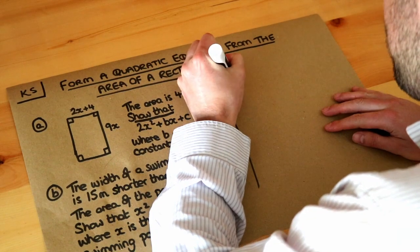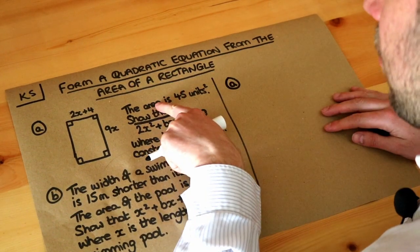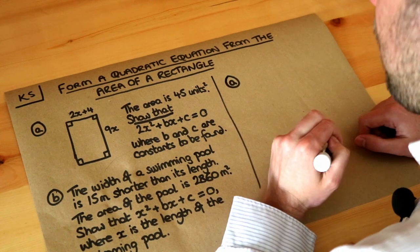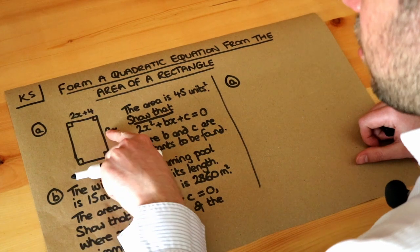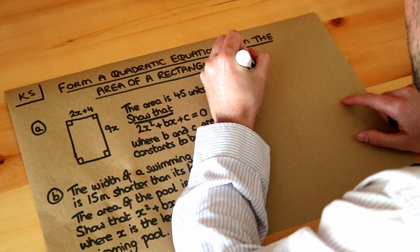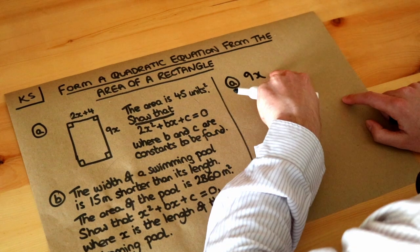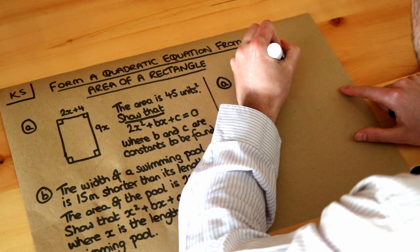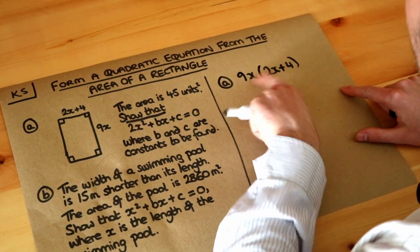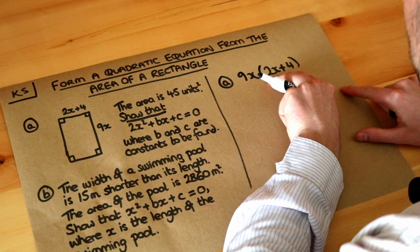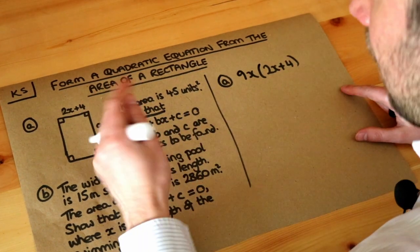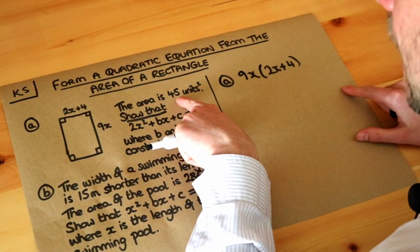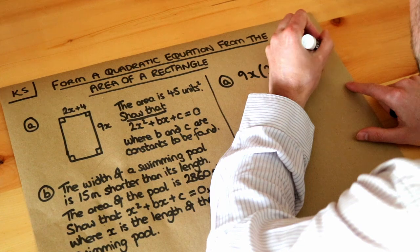So let's do the first part. It talks about the area of this rectangle. Now we know the area of a rectangle is just the width of the rectangle times the length of the rectangle. So, if we do the 9x, the length, and we multiply it by the 2x plus 4, rather than the times symbol I'm just going to write brackets like this, because remember when you put things next to each other in algebra, it means times them together. So this means 9x times by 2x plus 4, and that will give you the area of the rectangle. Now we're told the area is 45, so we can set this equal to 45.